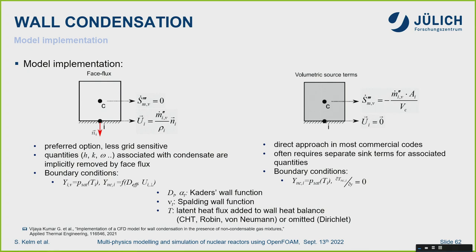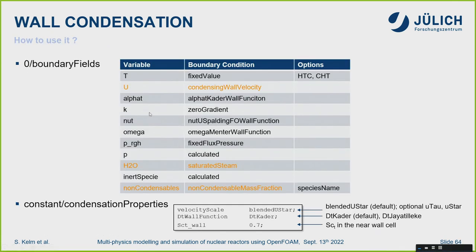Another advantage of OpenFOAM: instead of adding condensation as a source term evaluated at the cell center — which doesn't reflect the physics — we put the flux directly on the wall face. This appears as a convective term in the matrix, giving an implicit treatment, and we model all processes on the boundary itself. These models only work if boundary conditions for all related patches are specified in a very specific way, which our plausibility checks enforce.